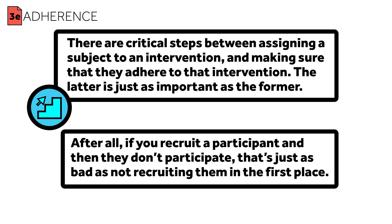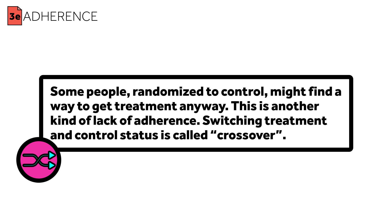After all, if you recruit a participant and then they don't participate, that's just as bad as not recruiting them in the first place. This is especially true with human subjects research. There are lots of reasons people might not adhere to the research protocol or be non-compliant. If they're taking a drug, maybe they had a side effect that led them to stop. Maybe they didn't understand the instructions given at the start of the trial. Maybe they just changed their minds and stopped doing what they were supposed to. Maybe they want to adhere, but they can't afford to. Maybe they don't have the support they need to make a change in their life. Some people randomized to control might find a way to get treatment anyway — this is another kind of lack of adherence.